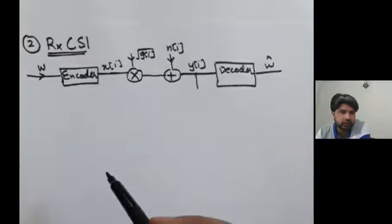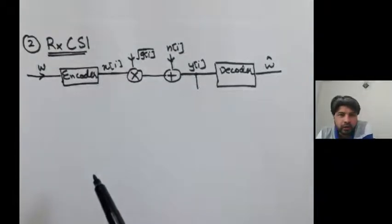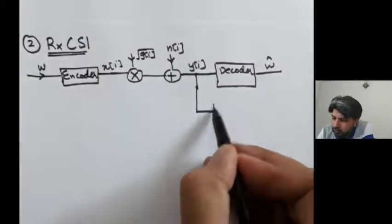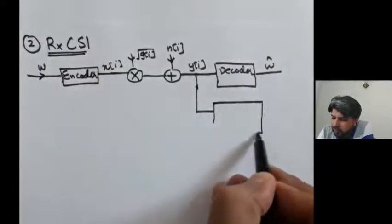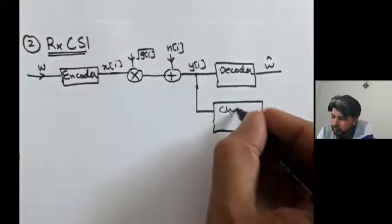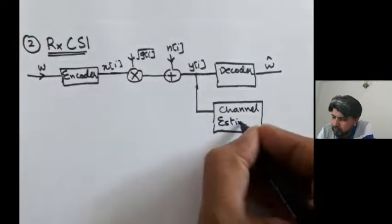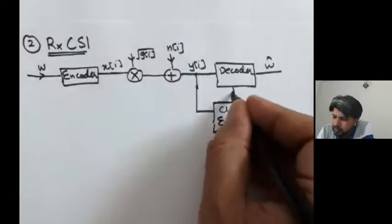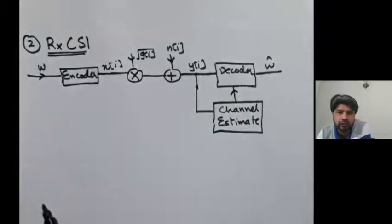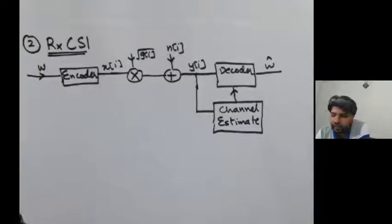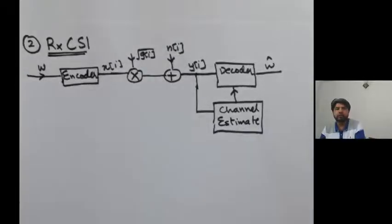This was the system model discussed earlier, but now because we have receiver CSI available, we have an additional block at the receiver end that gives us the channel estimate. This channel estimate is fed back to the decoder while making decisions. This is the updated system model, and now let's find the capacity of this channel.